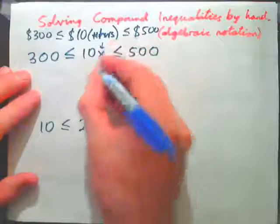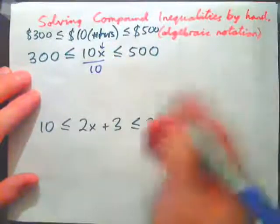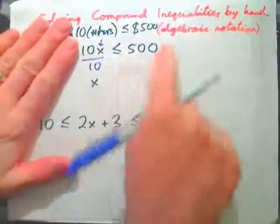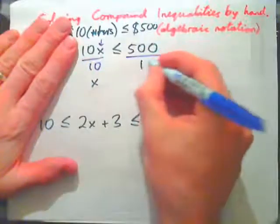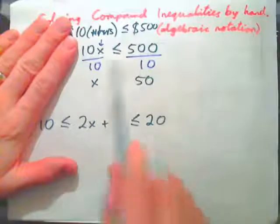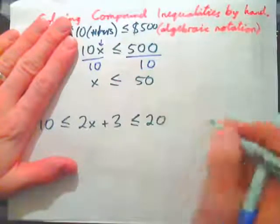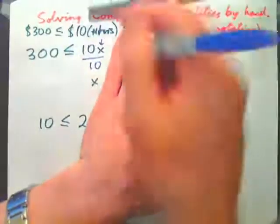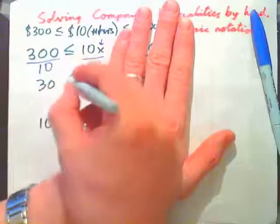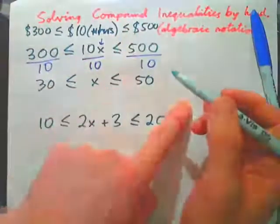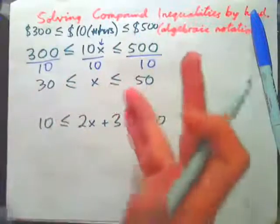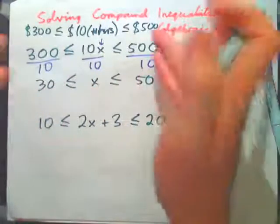We need to get x by itself, so we divide by 10. Now x is by itself in the middle. If I divide this by 10, I also need to divide the other side by 10, and I get 50. I divided by a positive number on both sides, so the direction of the inequality stays the same. Similarly, 10x ≥ 300 divided by 10 gives 30. So x is less than or equal to 50 and x is greater than or equal to 30 — meaning hours in this job would be between 30 and 50 to earn between $300 and $500.